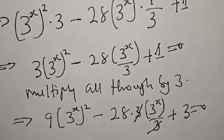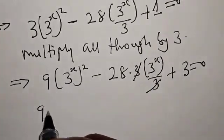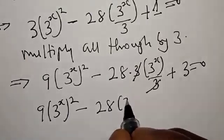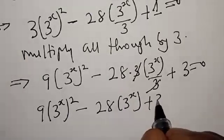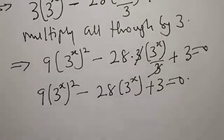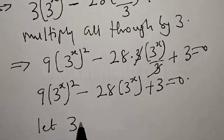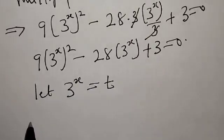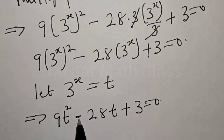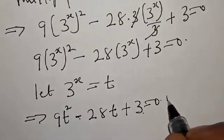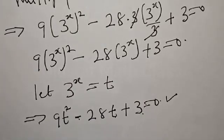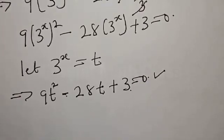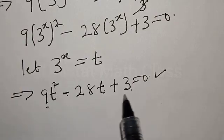We cancel the 3, and we are left with 9t squared minus 28t plus 3, equal to 0. Now we say let t equal 3 raised to the power x. Then this implies that we have 9t squared minus 28t plus 3 is equal to 0. This is a quadratic equation, and let's solve this by using the factorization method. Our constant value here is 9 times 3, that is 27.